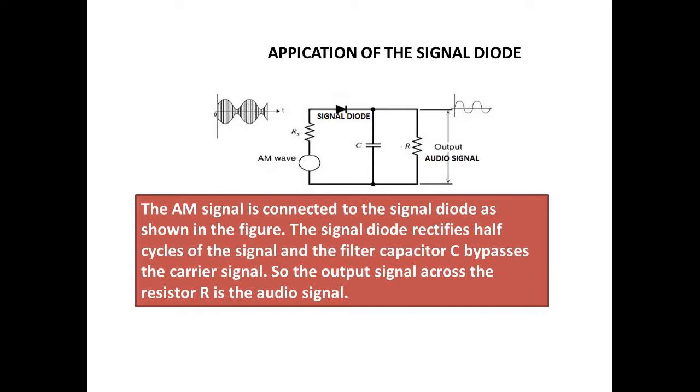The signal diode rectifies half cycles of the signal, and the filter capacitor C bypasses the carrier signal. So the output signal across the resistor R is the audio signal.